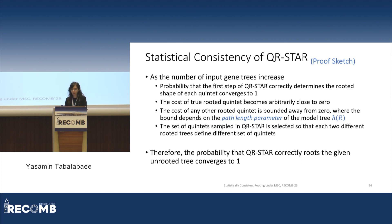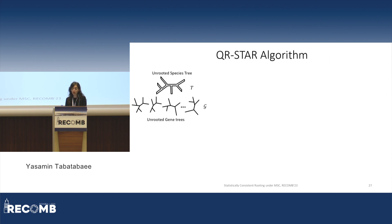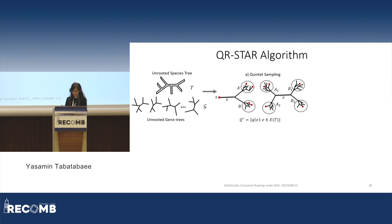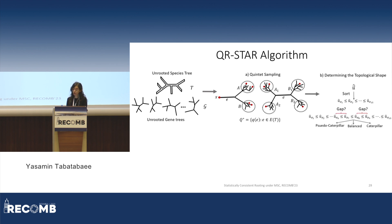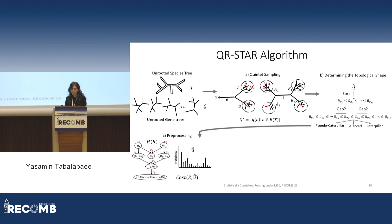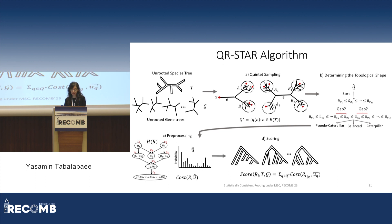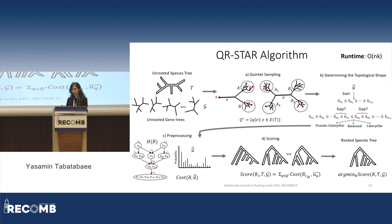To wrap up the theory, here is the proof sketch. We proved that as the number of input gene trees increases, the probability that the first step of QR* correctly determines the rooted shape converges to one. The cost of the true rooted quintet becomes arbitrarily close to zero, while the cost of any other rooted quintet is bounded away from zero. Therefore, the probability that QR* correctly roots a given unrooted tree converges to one. In the algorithm, the input is an unrooted species tree and a set of unrooted gene trees; we sample a linear set of quintets, use them to determine topological shape in a preprocessing step, compute the cost, sum over all selected quintets to score each candidate rooted tree, and the tree with minimum score gives the rooted species tree.